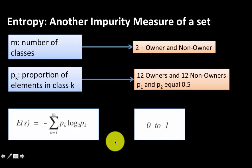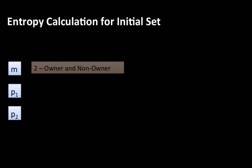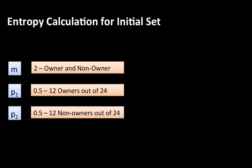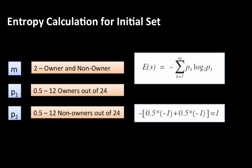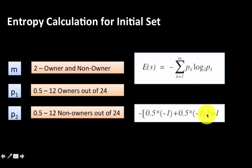Entropy takes values from 0 to 1. Zero means zero impurity — complete purity — and 1 means complete impurity. For this example, applying the formula gives: minus 0.5 times log base 2 of 0.5, which is minus 1, plus the same value again, giving an entropy of 1. Entropy means disorder.